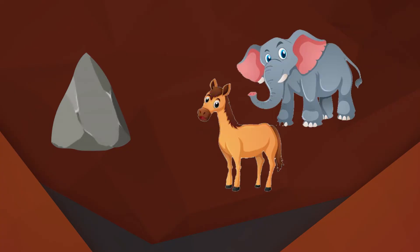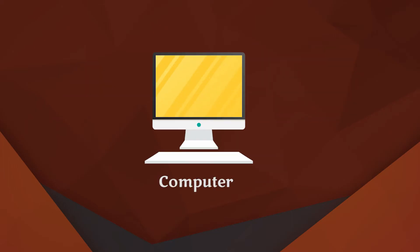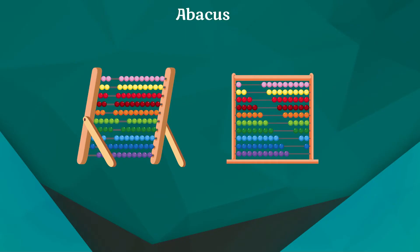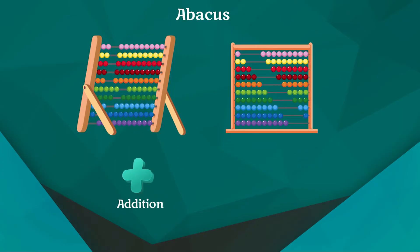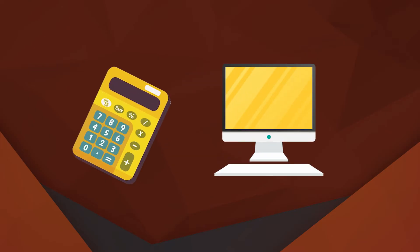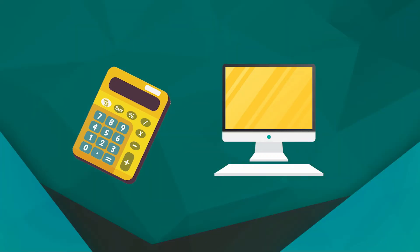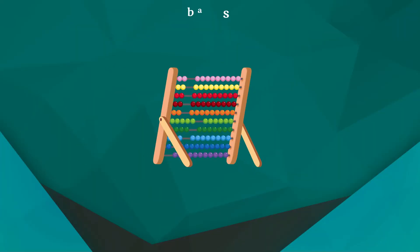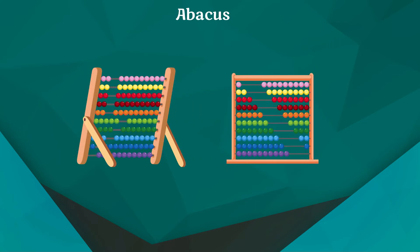When they started using stones to count their animals or possessions, they never knew that this day would lead to the computer of today. People started following a set of procedures to perform calculations with these stones, which later led to the creation of a digital counting device known as Abacus.